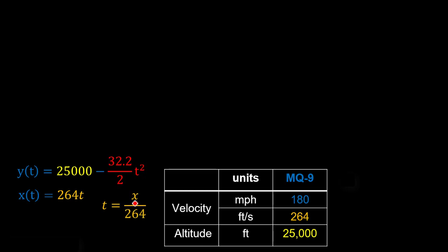And doing that, we get T equals X over 264, and then we can just take this right here and plug that in for T. And doing that, we can get Y of X, which is just going to be 25,000 minus 32.2 over 2 times X over 264 that we just subbed in squared.